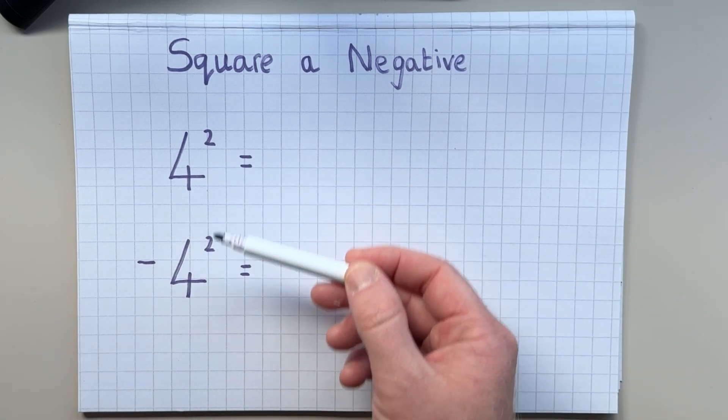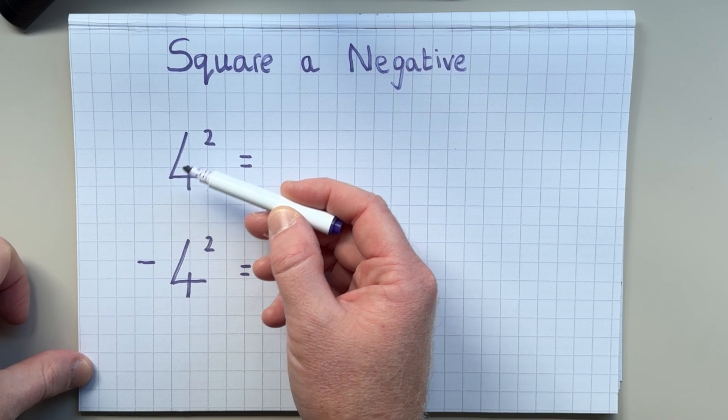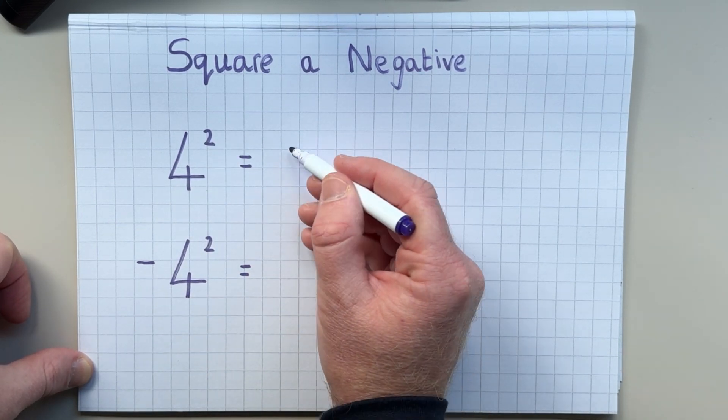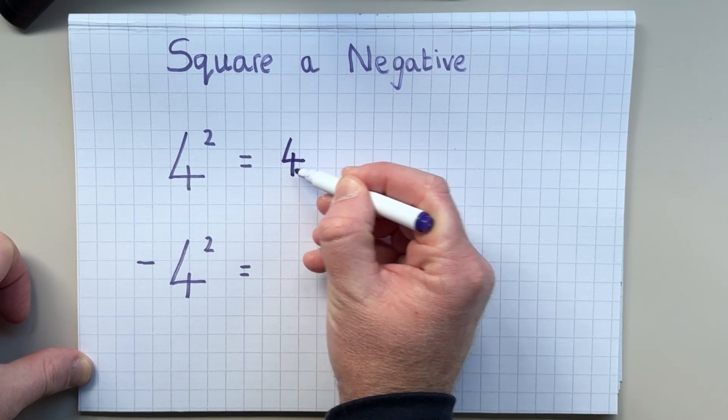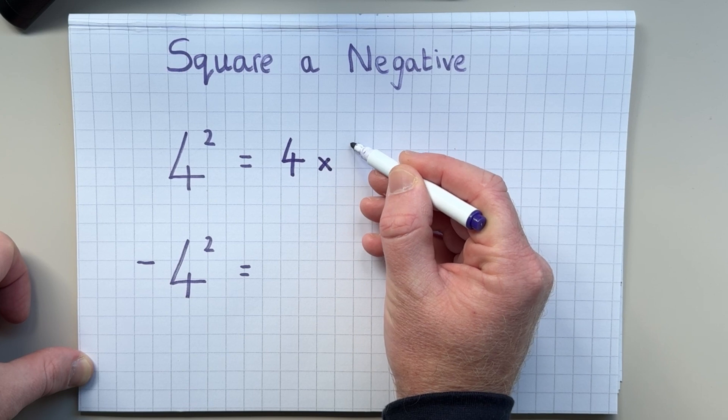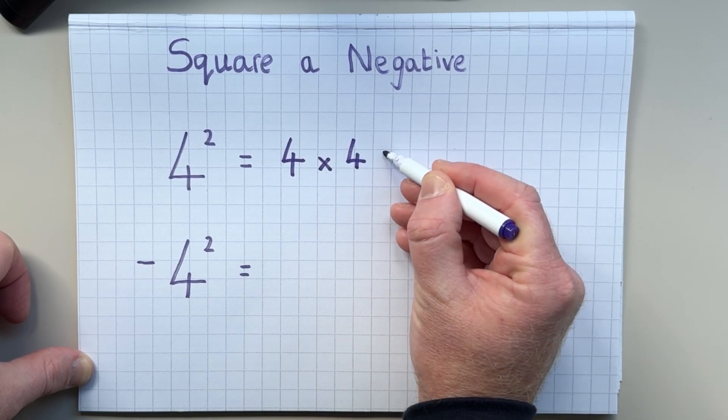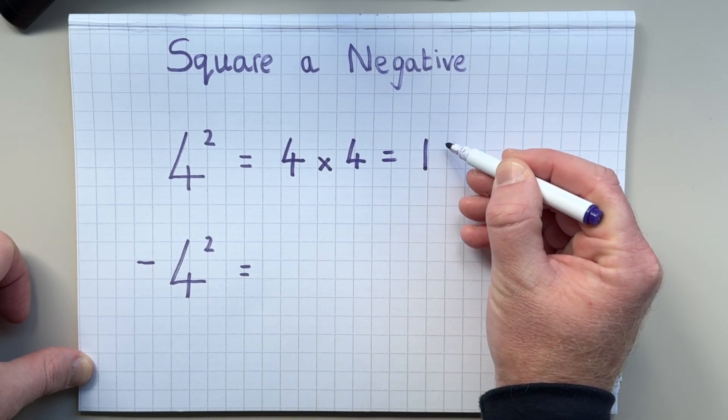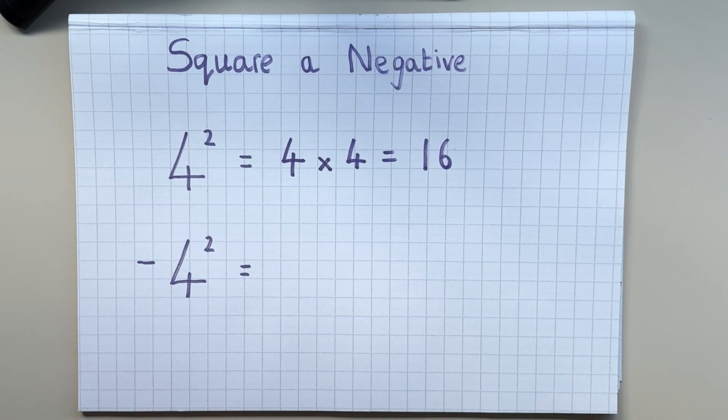So in my first two examples here, we have 4 squared. And we all know that 4 squared means 4 multiplied by 4. And we all know that the answer to that is 16. Nice and easy.